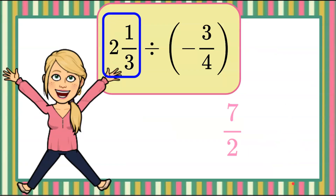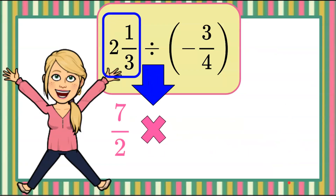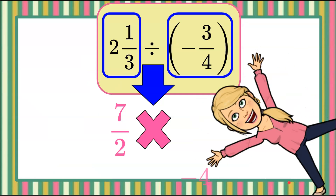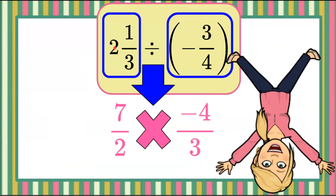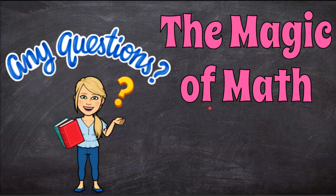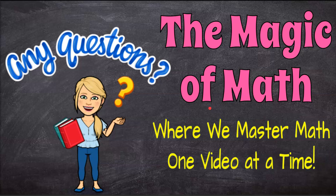And there you have it — that is how we divide rational numbers in fraction form. We keep the first value, change division to multiplication, and multiply by the reciprocal, flipping the numerator and denominator and keeping the sign with the numerator. Thanks for joining me today at The Magic of Math, where we continue to master math one video at a time. Have a great day and come back soon.